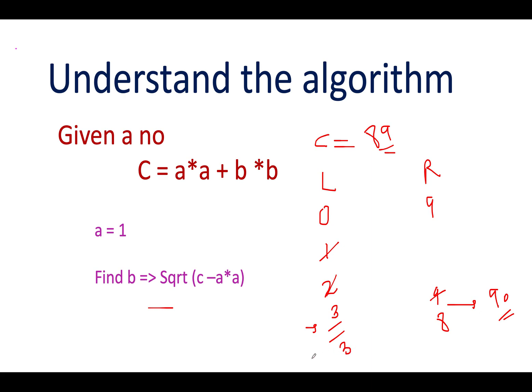So we have now 3 and 8. What is the square of 3? It's 9. What is the square of 8? 64. 64 + 9 is 73. 73 is lower than 89, so you'll increment the value of left. Left gets updated to 4. 4² is 16, 8² is 64. So 64 + 16 turns out to be 80.